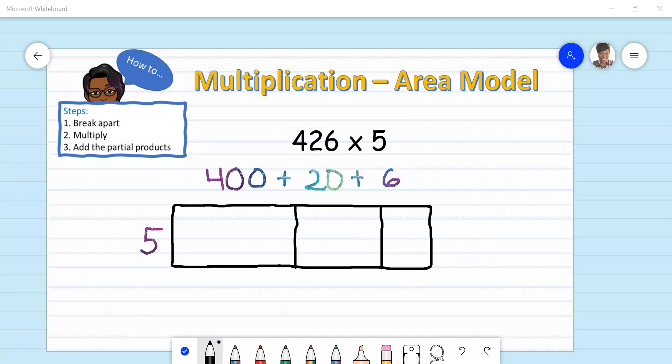Now I am ready to move on to step two, and that is to multiply. I will multiply 5 times 400, plus 5 times 20, plus 5 times 6.